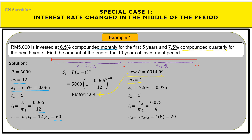The interest rate is now 7.5%. The term for this second period is 10 minus 5, so T equals 5 years. From K and M we calculate the periodic interest rate as 0.075 over 4, and the number of interest periods N equals 4 times 5, which is 20. The future value at the end of the 10-year investment period equals RM10,250.07.